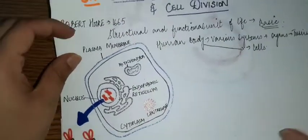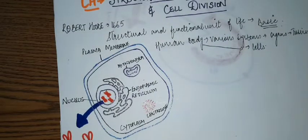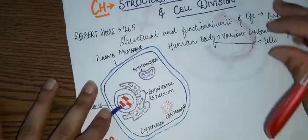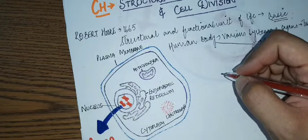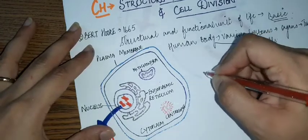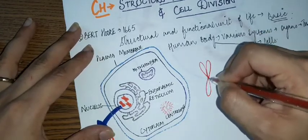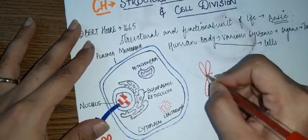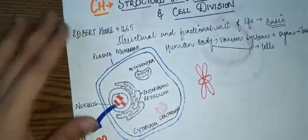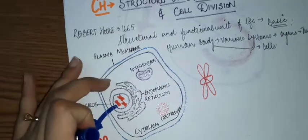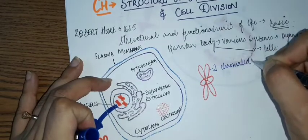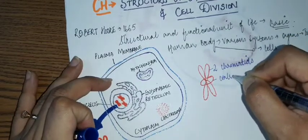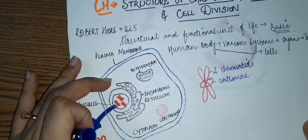Now let's look at the structure of chromosome. What is a chromosome? Chromosomes are two chromatids which are joined together with a center known as the centromere.